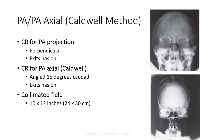For the PA Axial Caldwell position, the patient can be either upright or supine with the OML perpendicular to the table or upright bucky. The tube should be angled 15 degrees caudal for this view, and the CR should still exit the nasion. Both PA and PA Axial Caldwell views should be performed with a 10x12 inch field or smaller. The top image is the PA Axial Caldwell, which can be distinguished from the straight PA because the petrous ridges fill the lower one-third of the orbits. In the PA view, the petrous ridges completely fill the orbits.